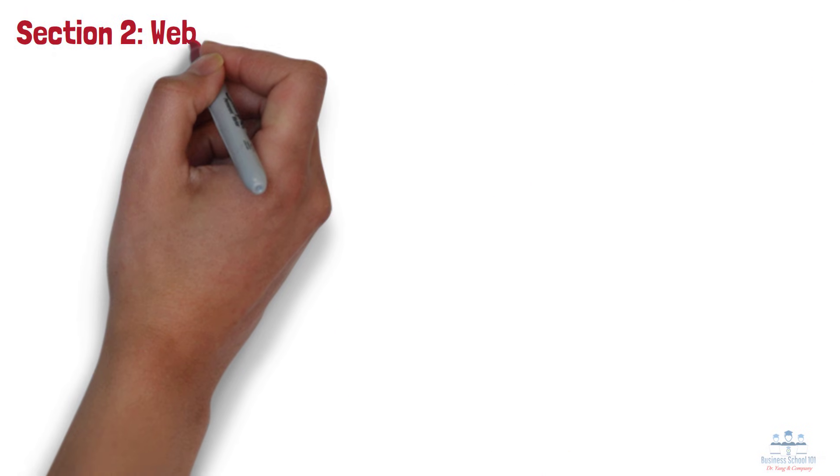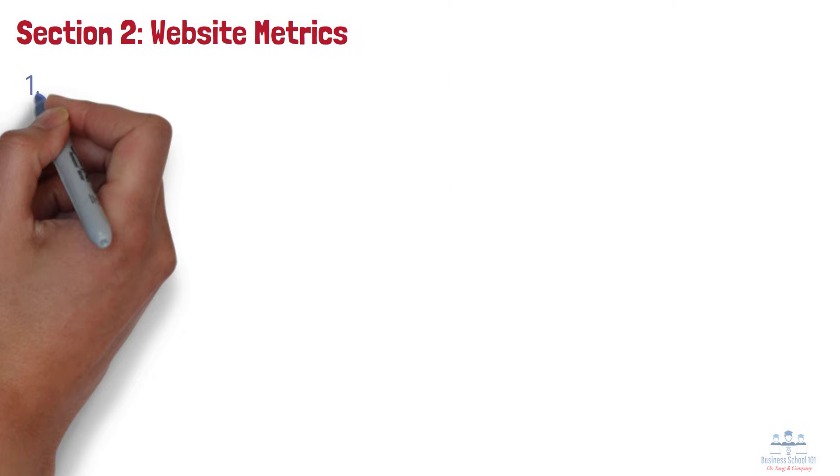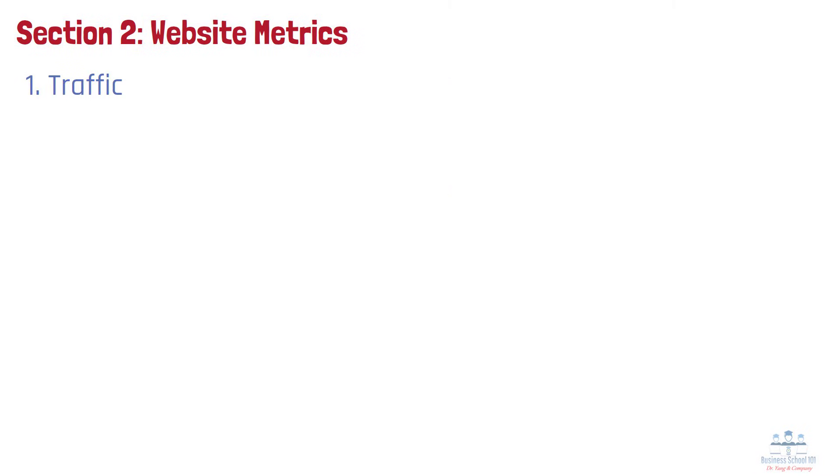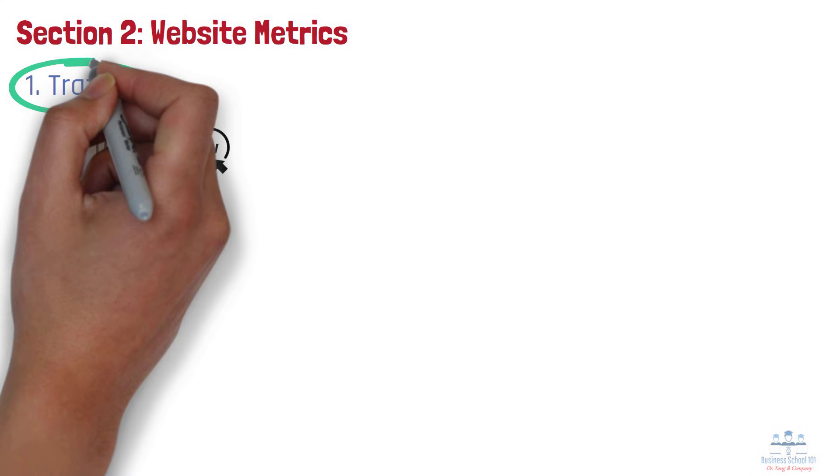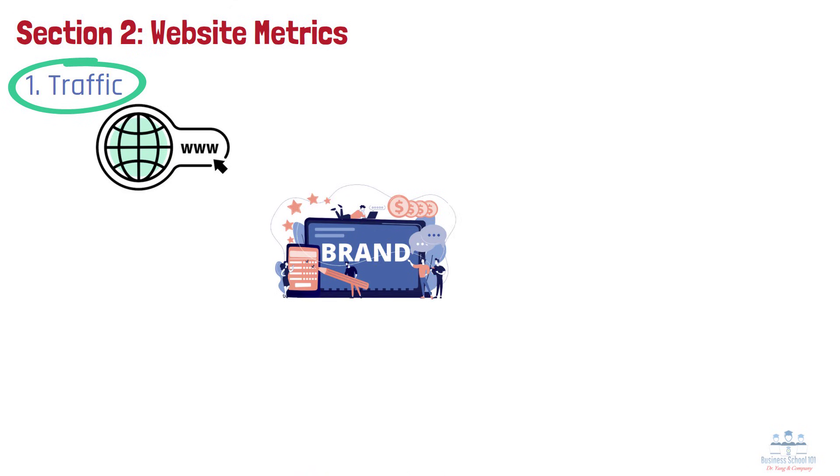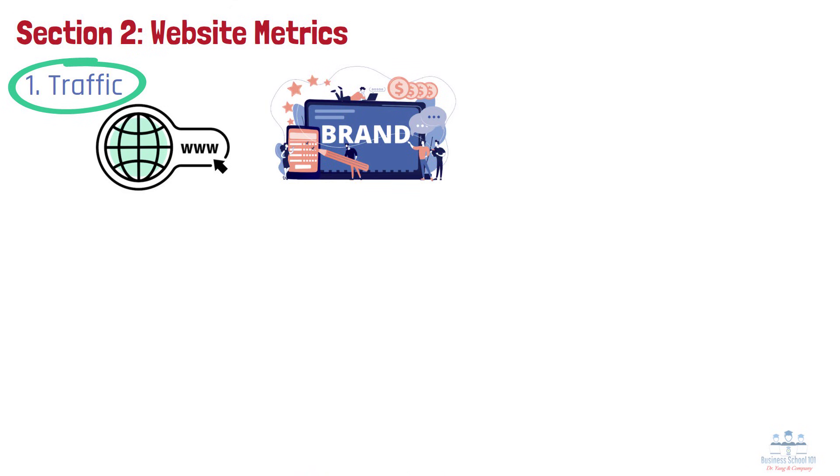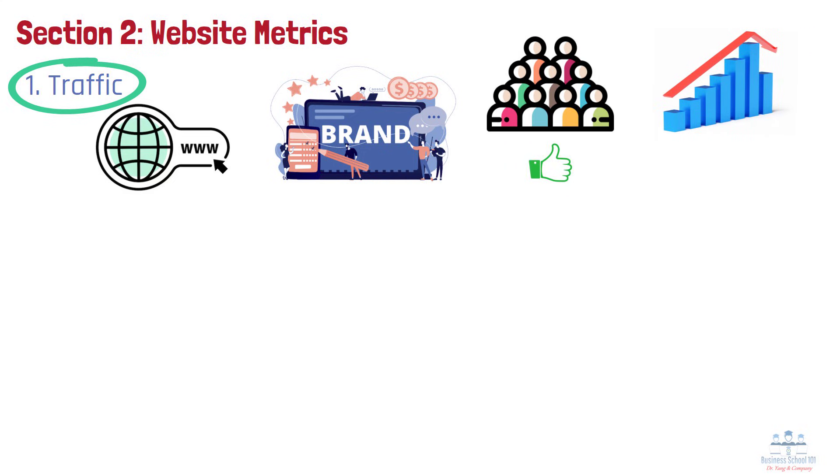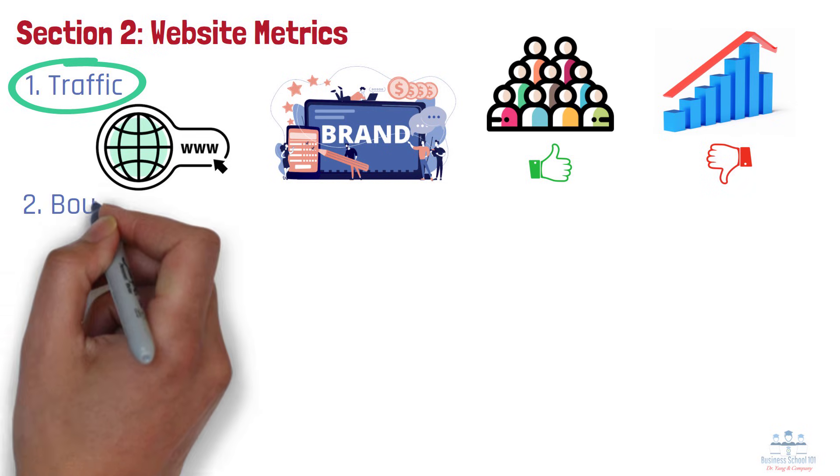Section 2. Website Metrics. Number 1. Traffic. Traffic refers to the total number of visitors to your website over a given time period. It's one of the most basic yet crucial metrics, helping you assess brand visibility and the effectiveness of your outreach campaigns. A surge in traffic after a new ad campaign indicates that people are noticing you, while a sudden drop might hint at technical issues or weaker messaging.